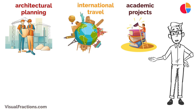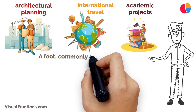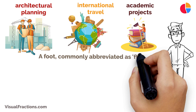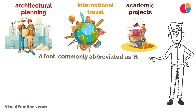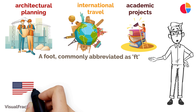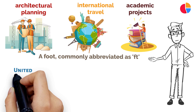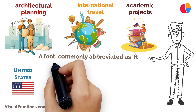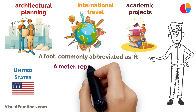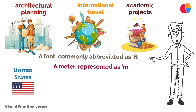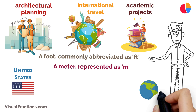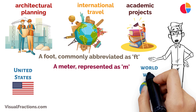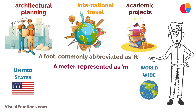Let's start with the basics. A foot, commonly abbreviated as FT, is a unit of length used primarily in the United States and a few other countries. A meter, represented as M, is the base unit of length in the metric system, which is adopted worldwide.